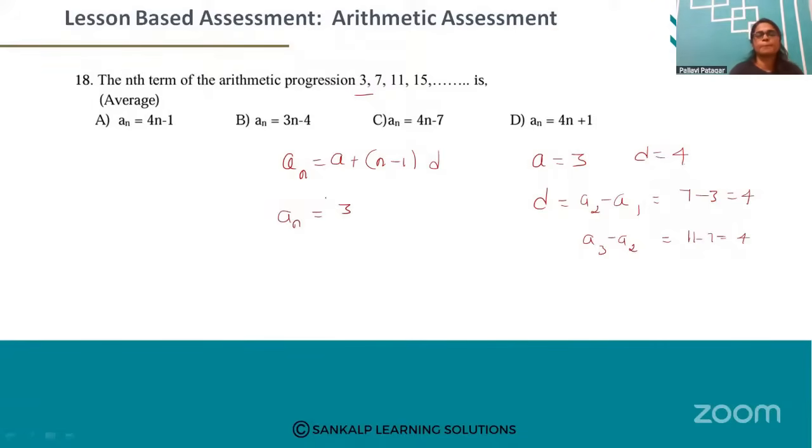plus (n minus 1) times 4. So 4n plus 3 minus 4 equals 4n minus 1. This is the nth term.